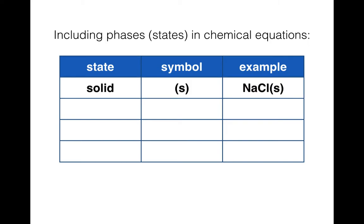In this table, we're going to have examples showing how to write the state, what symbol to use, and an example of each for the different phases. For solid, we use a lowercase s. When you write the phase in your balanced chemical equation, you put it in parentheses directly after the formula. So NaCl(s) means you have solid sodium chloride.